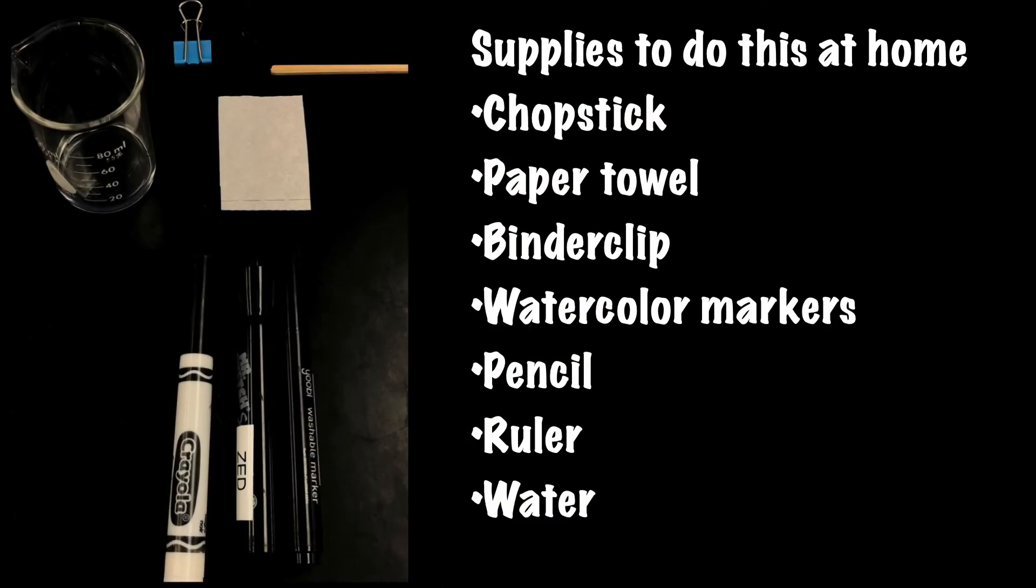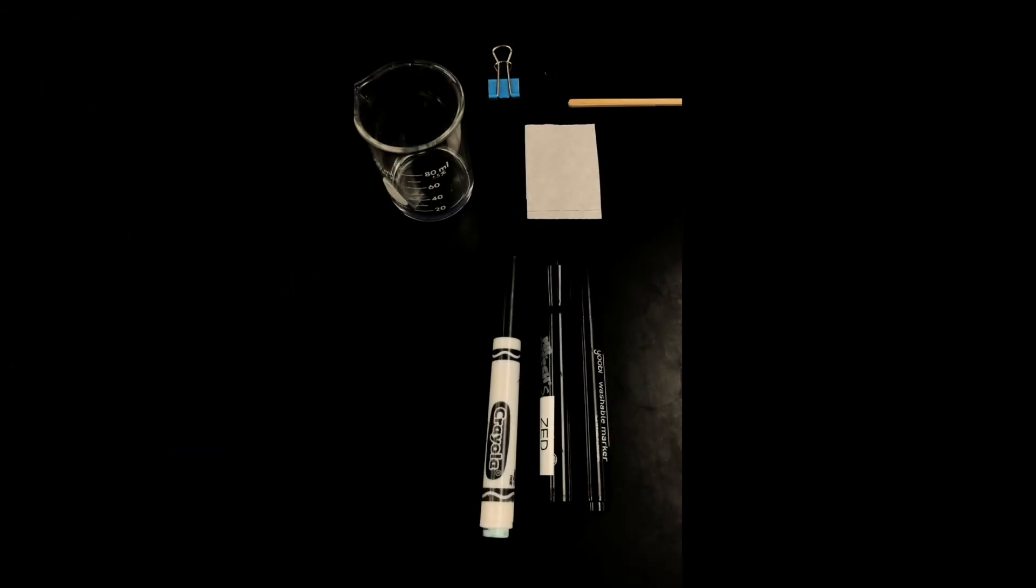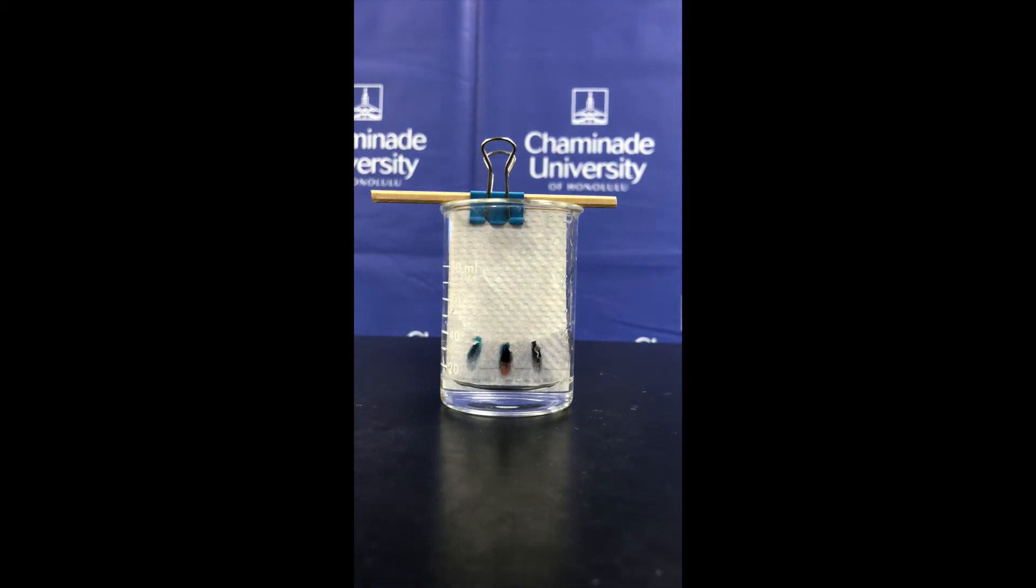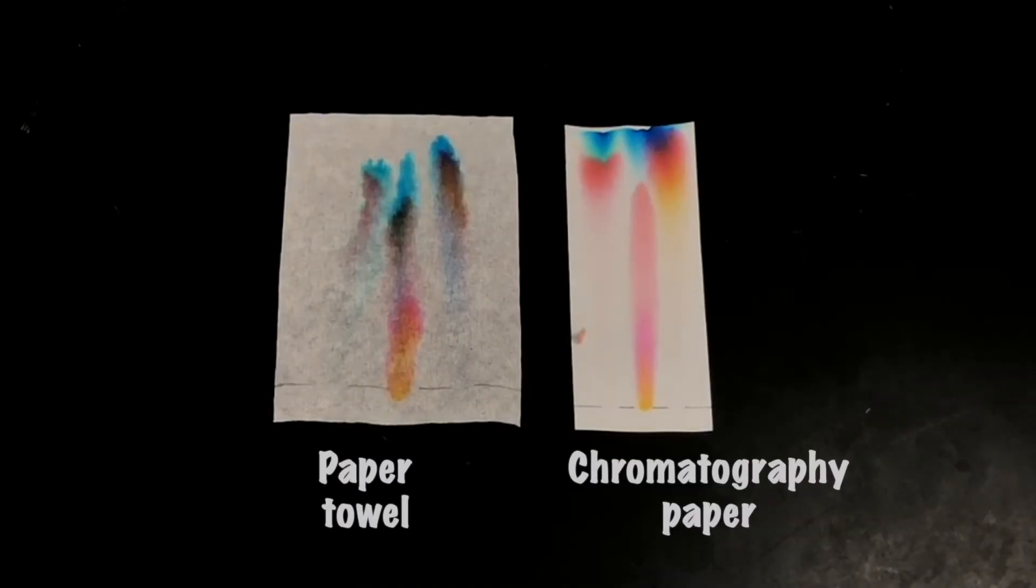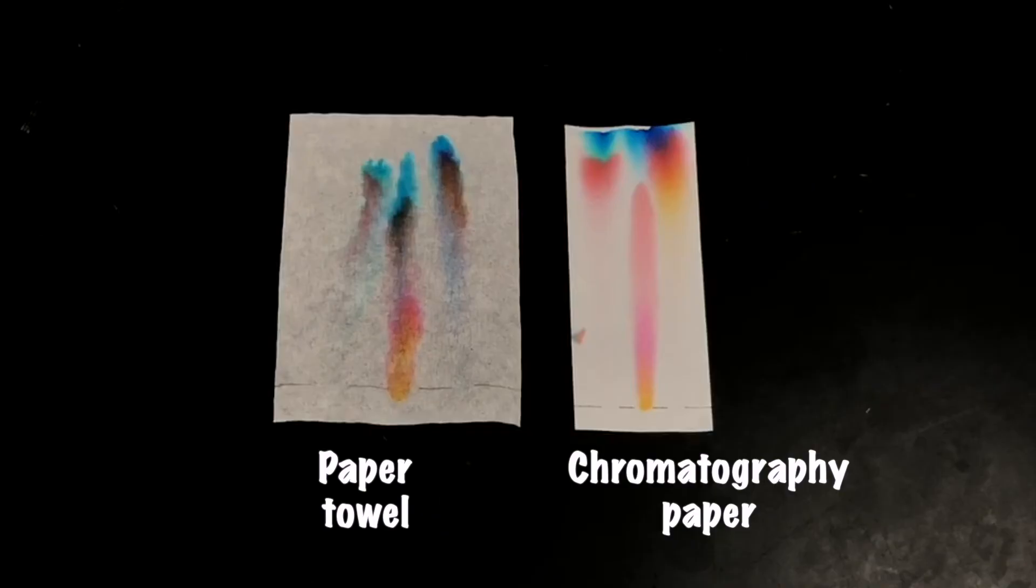If you want to try this at home, you just need water-soluble markers that you'll use to spot onto a piece of paper towel. We've cut our paper towel to fit inside of our beaker, but you could use any type of drinking glass or a glass jar. We can see here that the results are not exactly the same. Paper towel has a looser weave between the fibers and so things look a little bit more blurry.